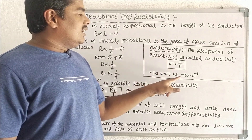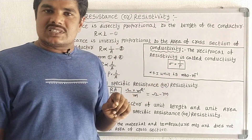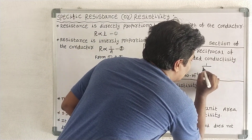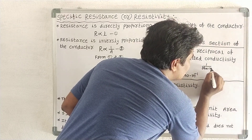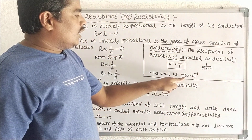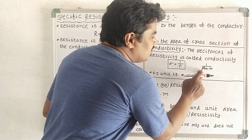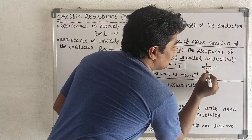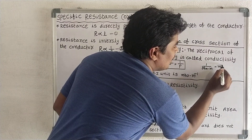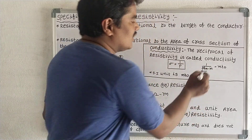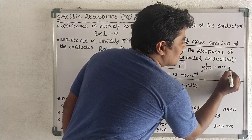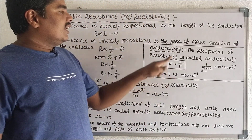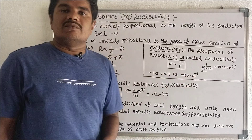The unit of conductivity is Ohm meter inverse. When we take the inverse of the unit of resistivity, we get Ohm inverse meter inverse. When we inverse Ohm, we get mho. The inverse of meter is meter inverse. So finally, the SI unit of conductivity is mho meter inverse.